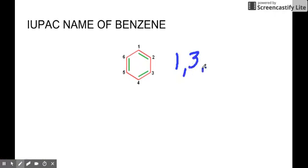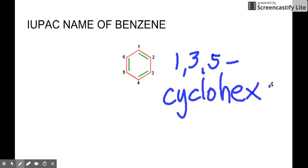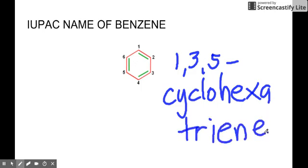So we get one, three, five, and that will be cyclic. So you have cyclo, and since it's six carbon, so that's hexa, and then there are three double bonds, that means triene. So the IUPAC name of benzene is now 1,3,5-cyclohexatriene. That is now the name of our benzene.